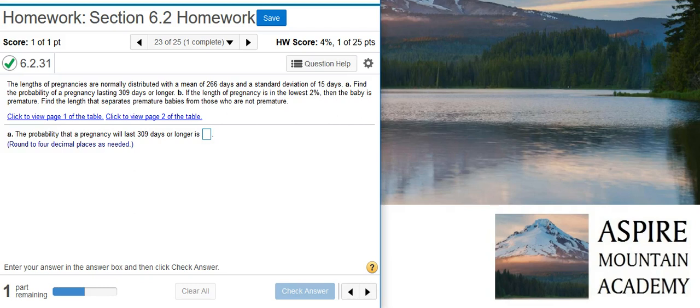Here's our problem statement. The lengths of pregnancies are normally distributed with a mean of 266 days and a standard deviation of 15 days. Part A: find the probability of a pregnancy lasting 309 days or longer. Part B: if the length of pregnancy is in the lowest 2%, then the baby is premature. Find the length that separates premature babies from those who are not premature.